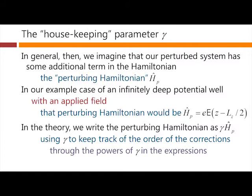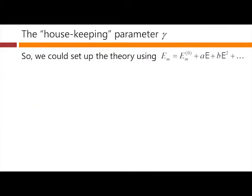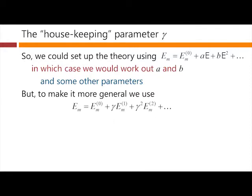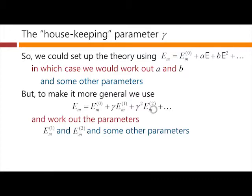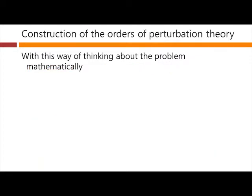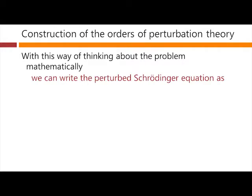We track the different powers of gamma in the various expressions we come up with. Once we've done that, we can set gamma equal to one at the end if we like. We could have set up the theory by working out A and B directly, and it could still be a perturbation theory. But to make it more general and to correspond to the notation typically used in quantum mechanical perturbation theory, we write it in this form instead and work out the parameters E_m1 and E_m2 and possibly others.